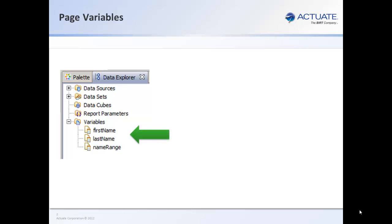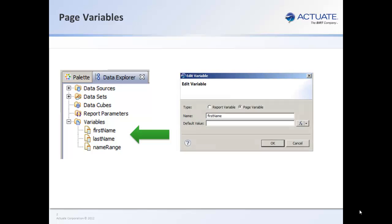Page variables are created using the data explorer view and can be report variables or page variables. Report variables are evaluated when the report is complete, and page variables are evaluated at the time a page is written.